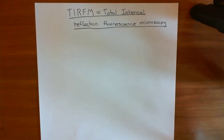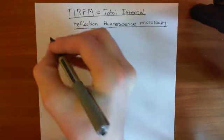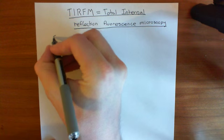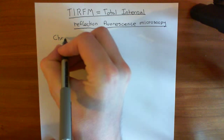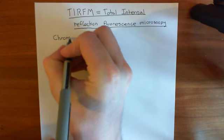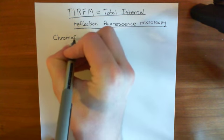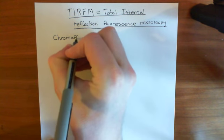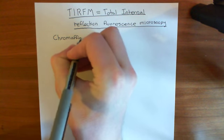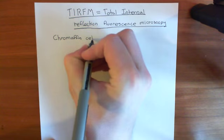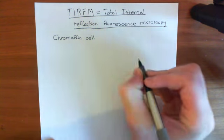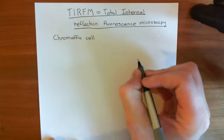So firstly, let's talk about the type of cell that we're actually going to image. It's a type of cell known as a chromaffin cell. What is a chromaffin cell? Well, basically, it's a cell of the adrenal medulla.